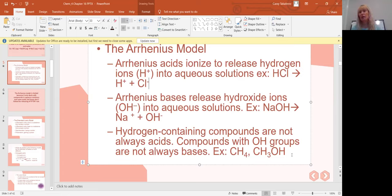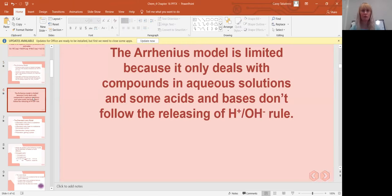This is a very incomplete definition. It sometimes works, but it does not run the gamut as far as all the acids and bases that exist. It's kind of misleading because methane, even though it looks like it would have hydrogen ions, does not. They do not get released in water, and methanol does not release OH in water. The Arrhenius model is limited because it only deals with compounds in aqueous solutions and some acids and bases don't follow those H and OH rules.